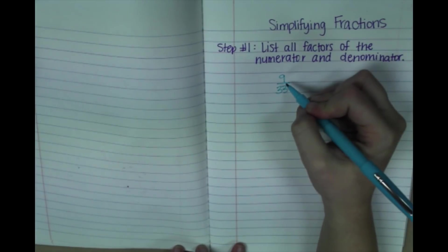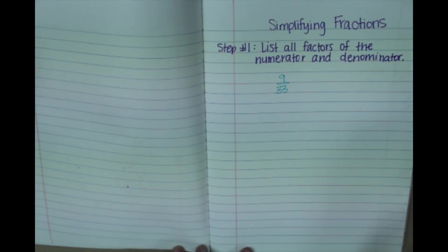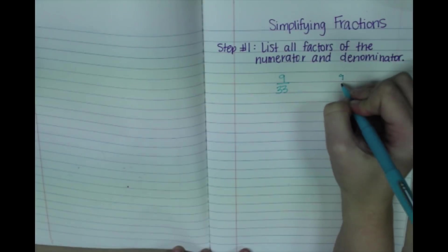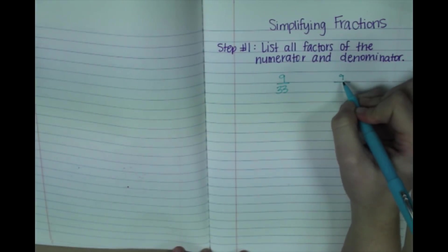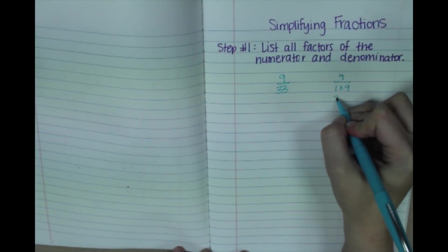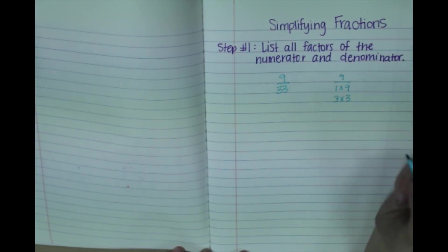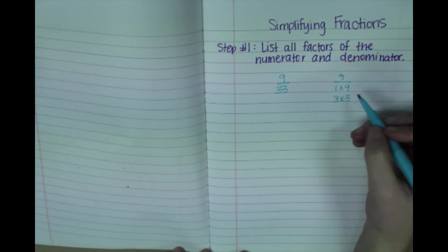So we would list the factors of 9 and the factors of 33. So let's start with 9. I'm going to come over to the side. I know that 1 times 9 gets me 9, and I also know that 3 times 3 also equals 9. So my factors of 9 are 1, 3, and 9.